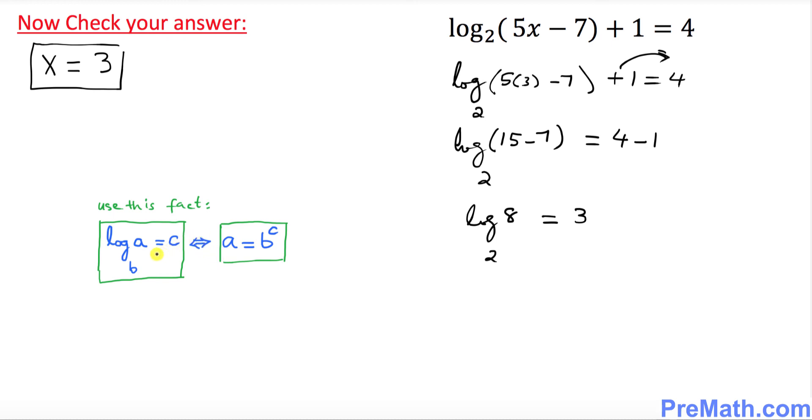Now we will use this fact. We're going to be converting from logarithmic form into exponential form. So this could be written as 8 equals to 2 power 3. So 2 power 3 is written as 8 and on the left hand side is 8.